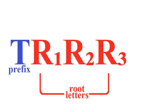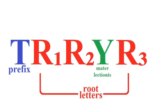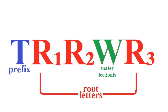And in many of these cases, a verbal noun of this structure will also include a mater lectionis, often between the second and third root letters, such as a yod or a ya, or alternatively a wa. However, there are other terms of this structure which don't have a mater lectionis.